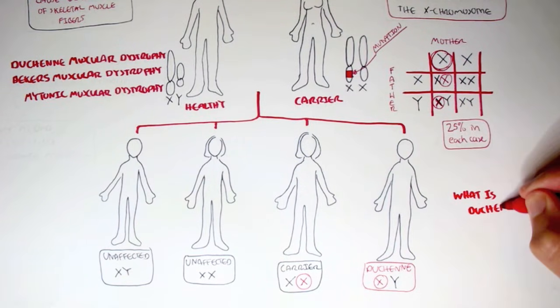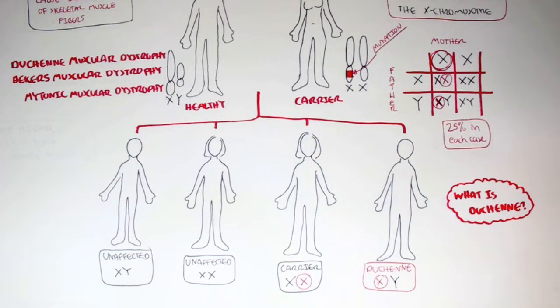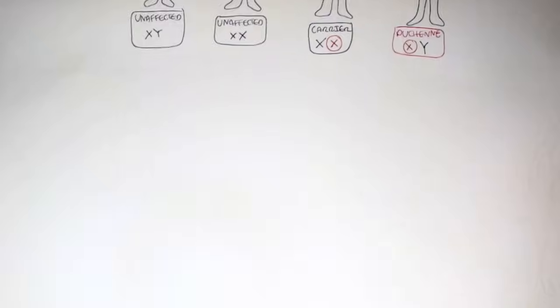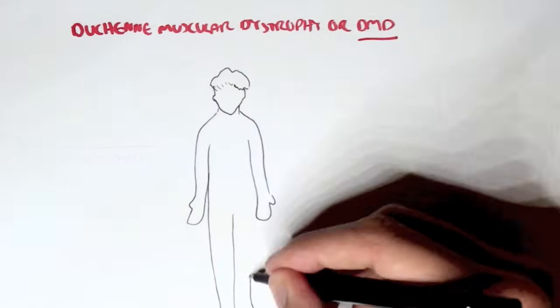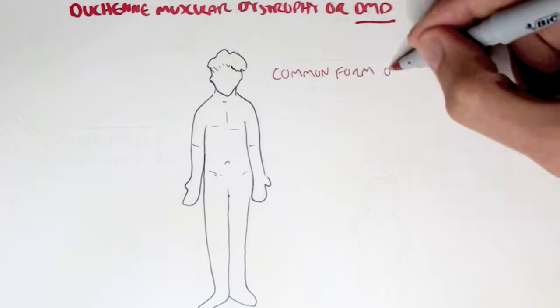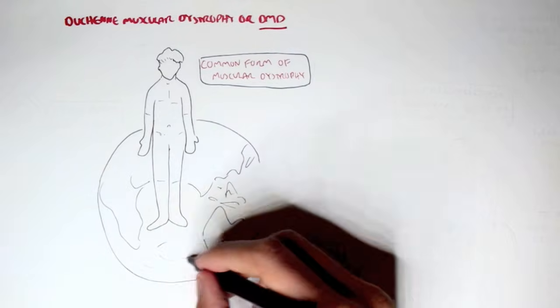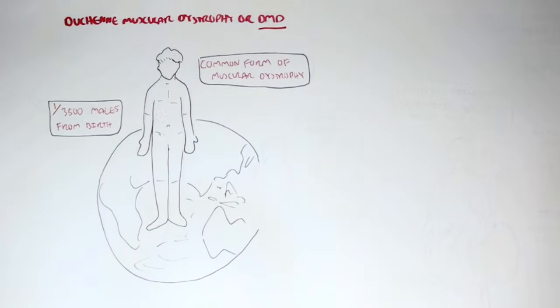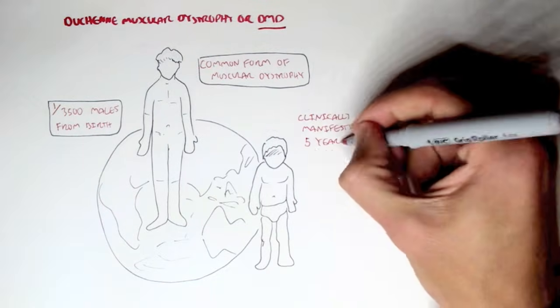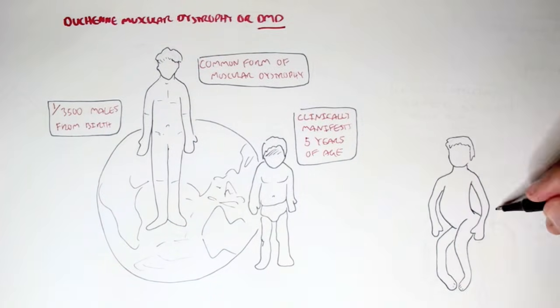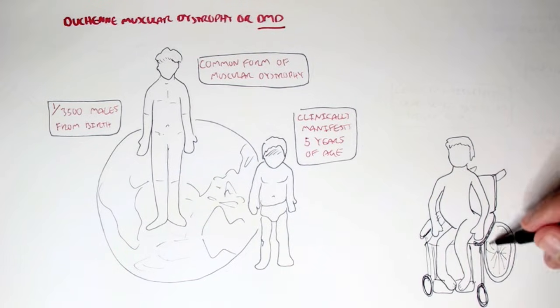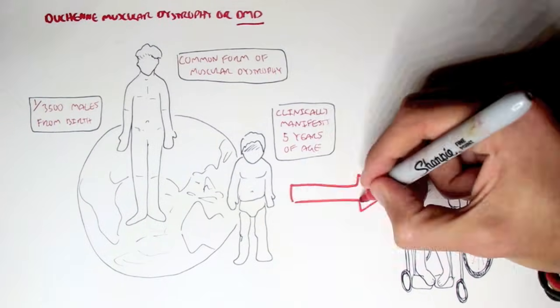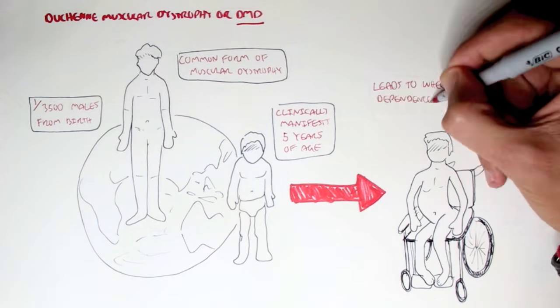So, what is Duchenne? Now, let's look at it in more detail. Duchenne muscular dystrophy, or DMD, is the most common form of muscular dystrophy. In the world, 1 out of 3,500 males from birth are affected. It clinically manifests at 5 years of age or under, and it will eventually lead to wheelchair dependence, unfortunately, by the age of 10 to 12 years old.